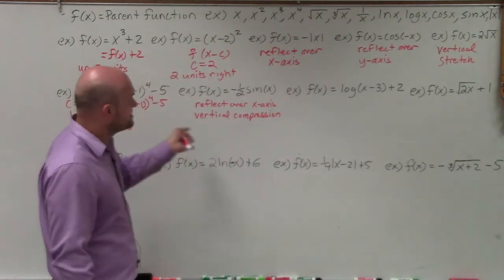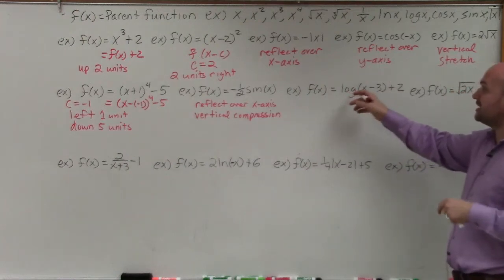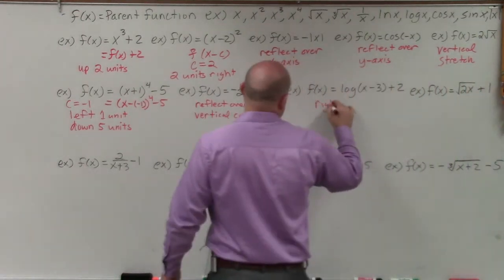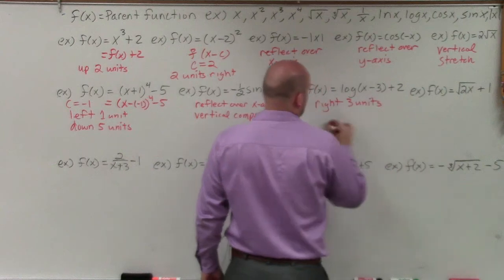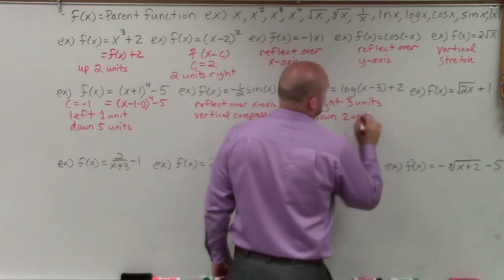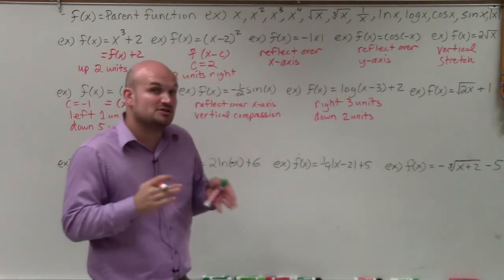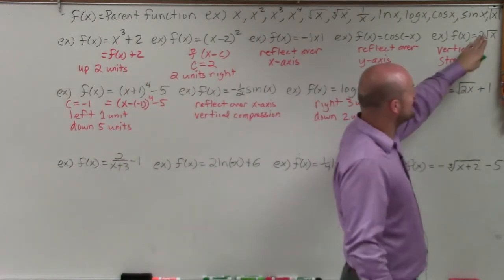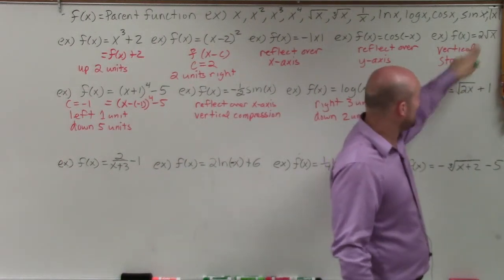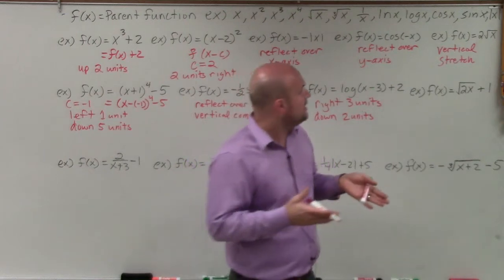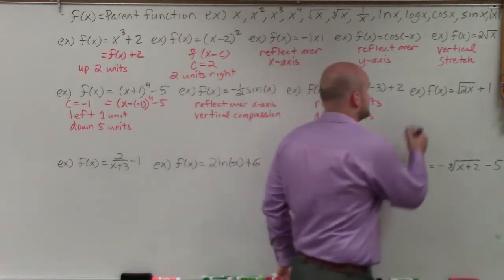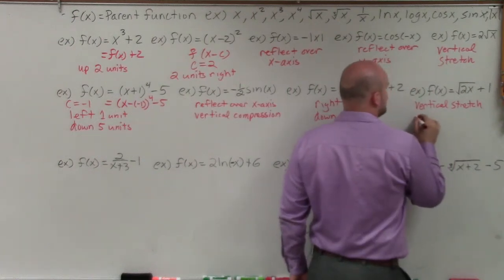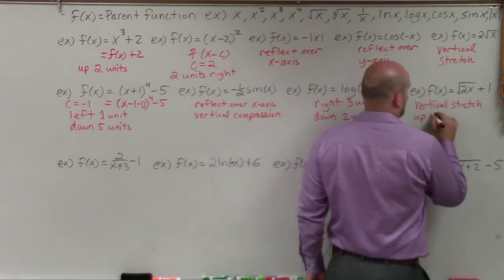This example is similar. I have log of (x minus 3) minus 2. I'm subtracting 3 inside and subtracting 2 outside, so that's right 3 units and down 2 units. Then the last one here: I have the square root of 2x plus 1. I'm multiplying by 2 inside the function and adding 1 outside. That's still a vertical stretch, and since I'm adding 1 outside, it's shifted up 1 unit.